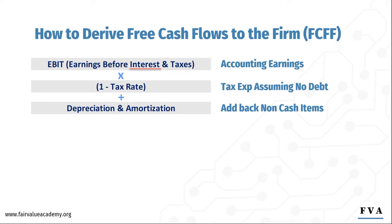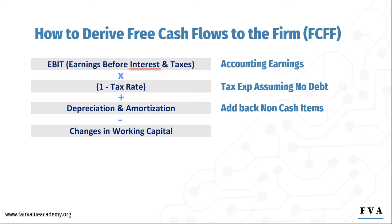Next, we need to adjust for changes in working capital. Working capital are those short-term assets and liabilities that you need to run a business. Working capital items are things like inventory, accounts receivables, and accounts payables. Think about when a business is growing and sales are increasing — if you are selling on credit, your accounts receivables over time will start to get bigger. And as your business grows, you need to purchase inventory, and if this inventory is bought on credit, then your accounts payable tends to increase. This is all called working capital, which we did cover in detail in an earlier session.